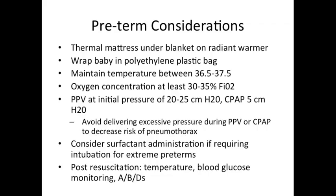Lastly, when attending the delivery of a preterm infant, there are important considerations to take into account. Remember to use a thermal mattress under the blanket to prevent heat loss. Wrapping the baby in a plastic bag will also assist with preventing heat loss. Make sure that temperature is maintained between 36.5 and 37.5 degrees Celsius. Oxygen should be set to at least 30 to 35% FiO2. For PPV administration, set initial pressures to 20 to 25 cm H2O with a PEEP of 5 cm H2O, as these infants are at higher risk of barotrauma. Consider surfactant administration based on gestational age. During post-resuscitation care, remember to monitor temperatures, blood glucoses, and apneas and bradycardias.